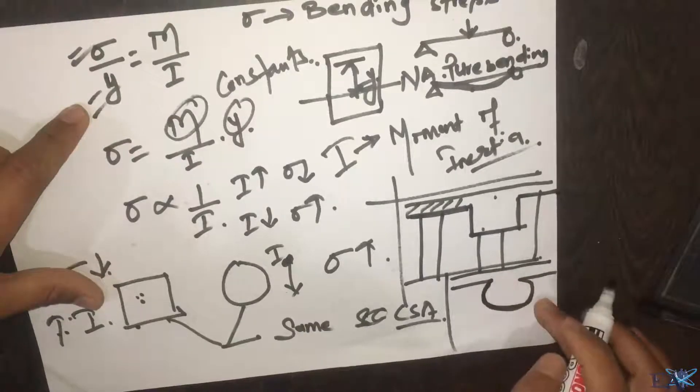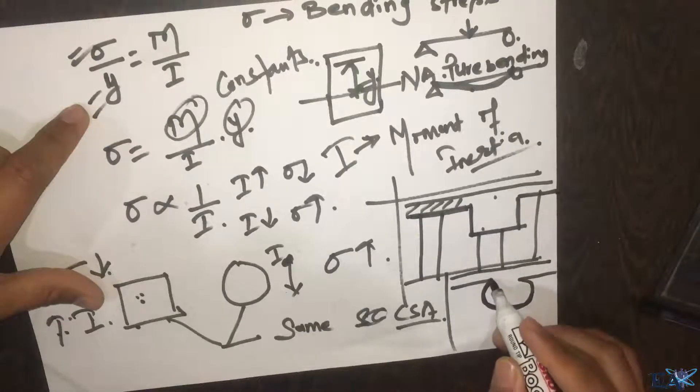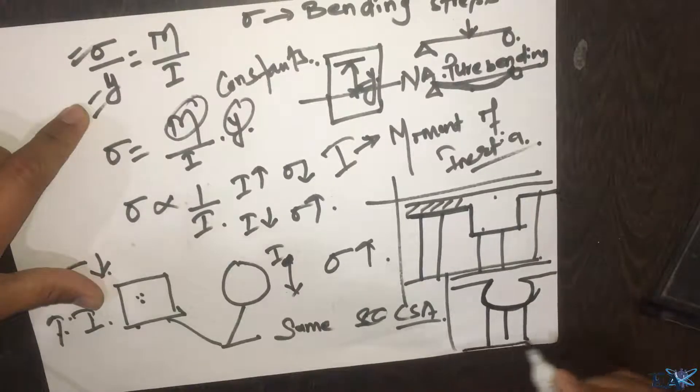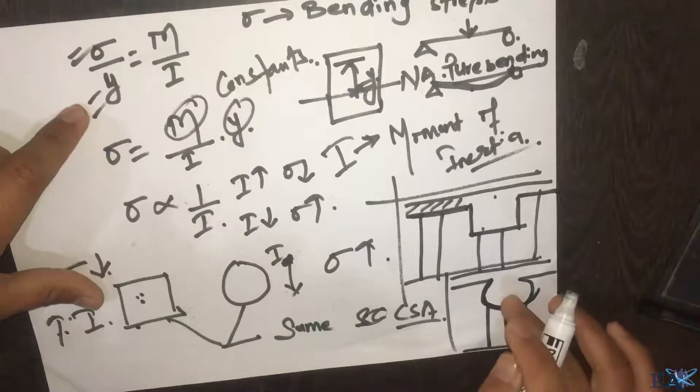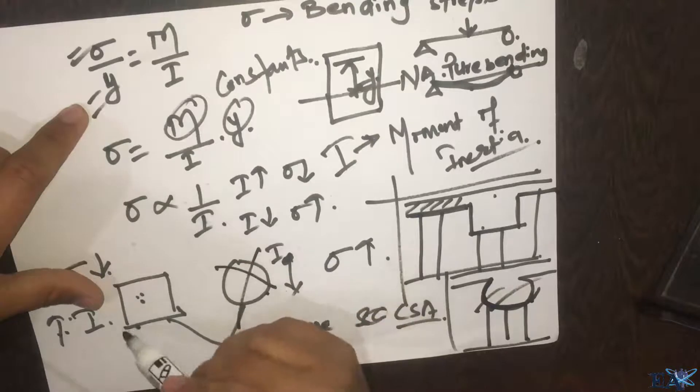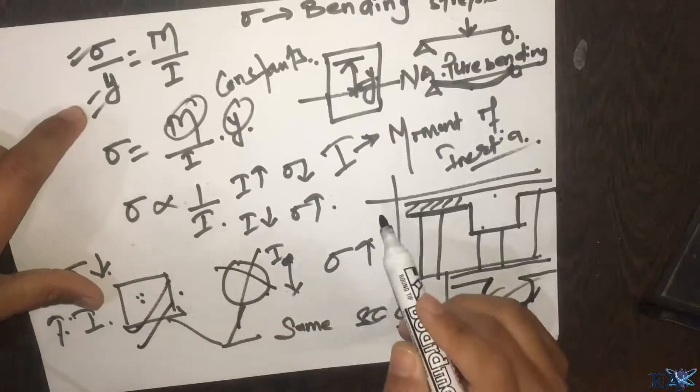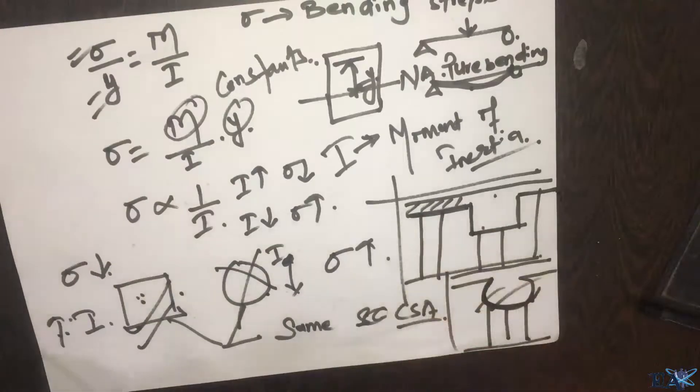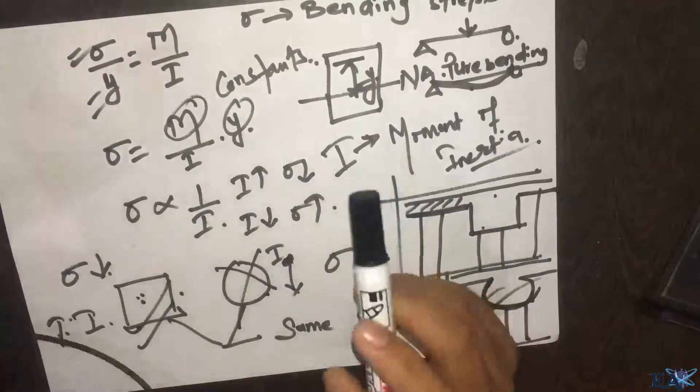You cannot put your formwork like this, and how are you going to support these formworks with your props? It's very tough. Due to this reason also, we don't opt for circular sections and we go for rectangular or square sections. Hope this video was helpful. Thank you for watching.